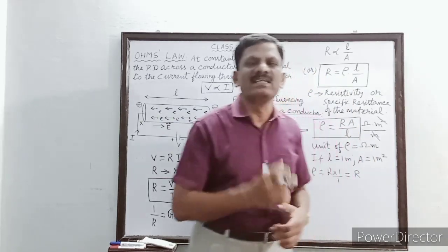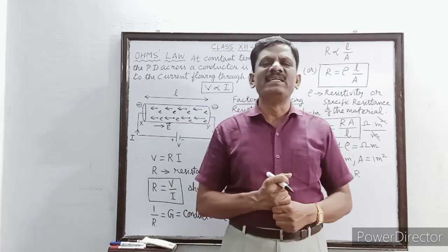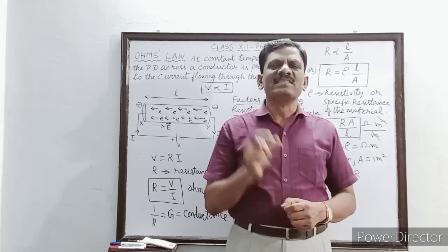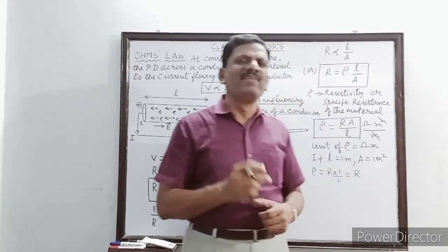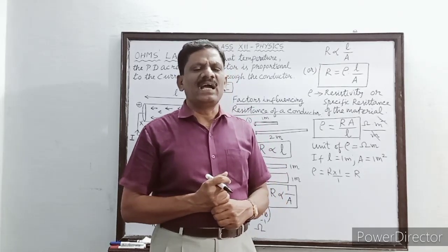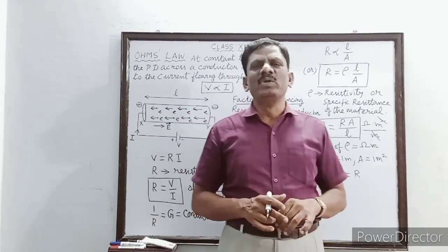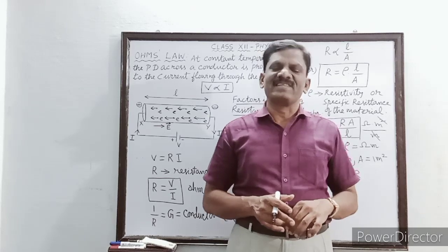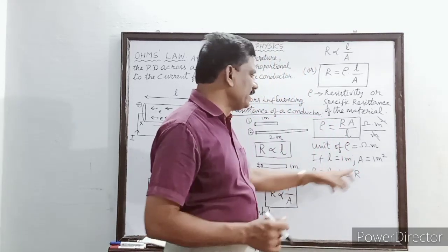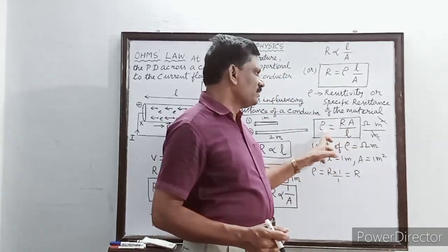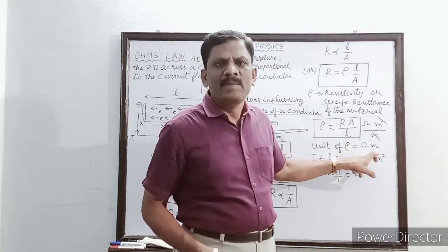The specific resistance of a material is defined as the resistance offered by a conductor of unit length and unit area of cross section. Its SI unit is ohm·metre.